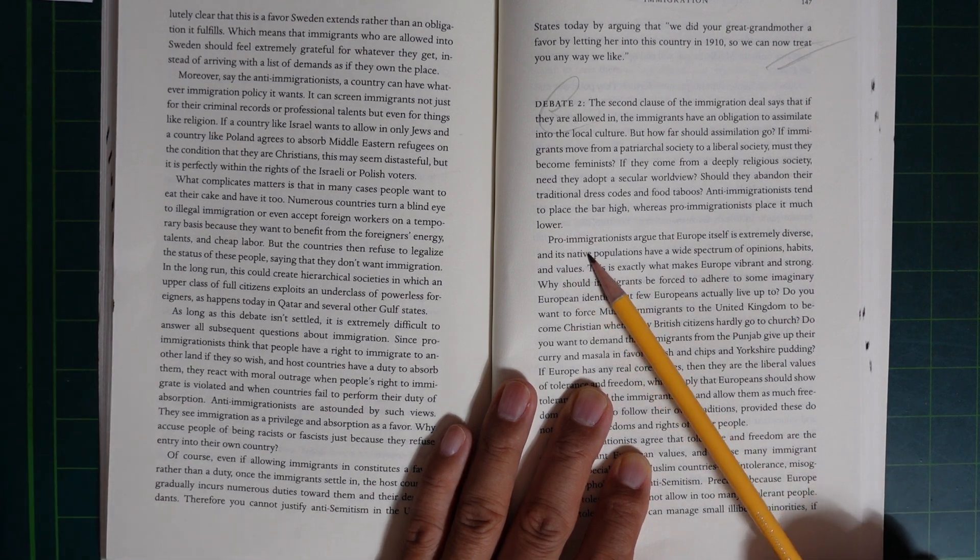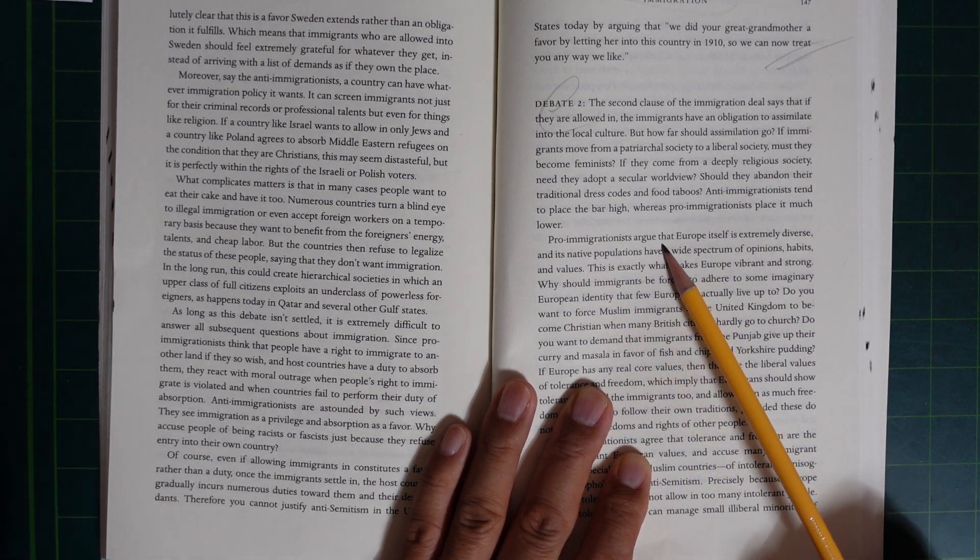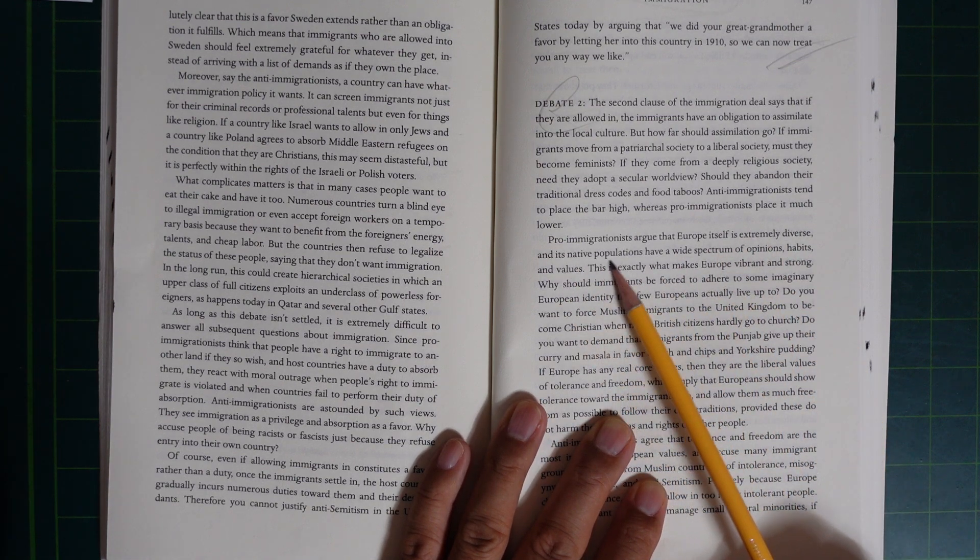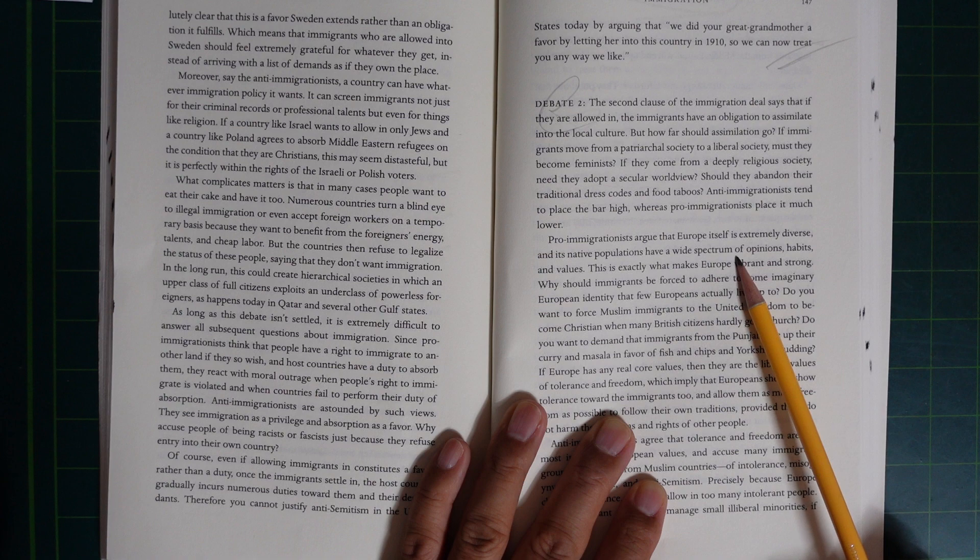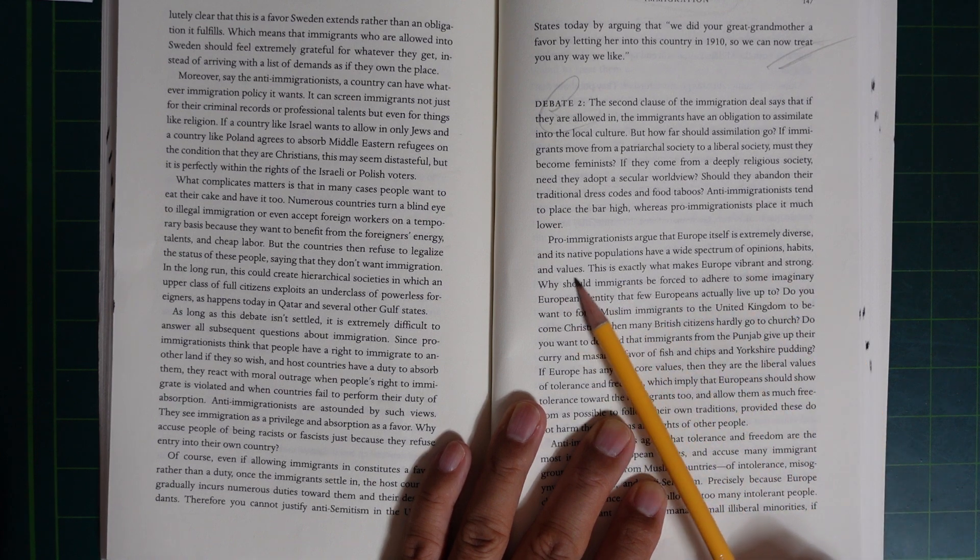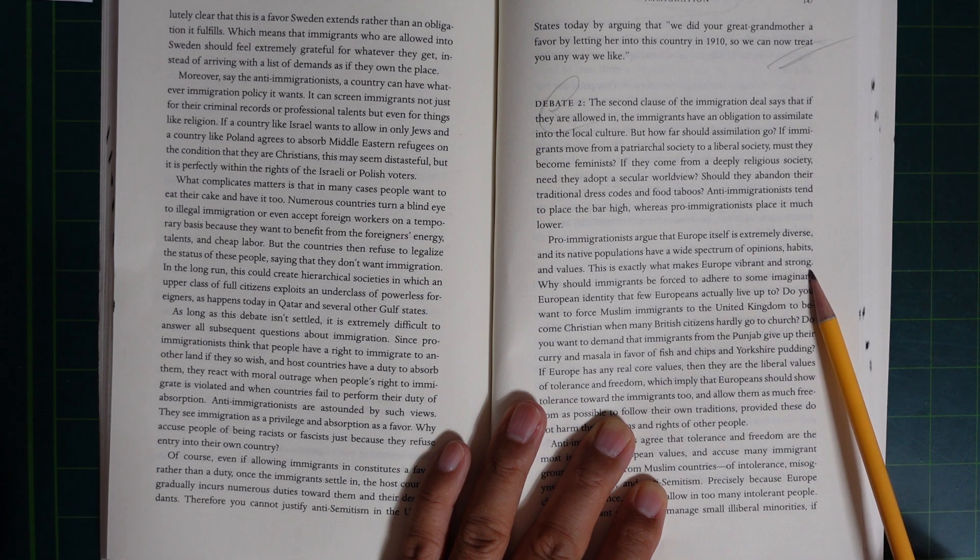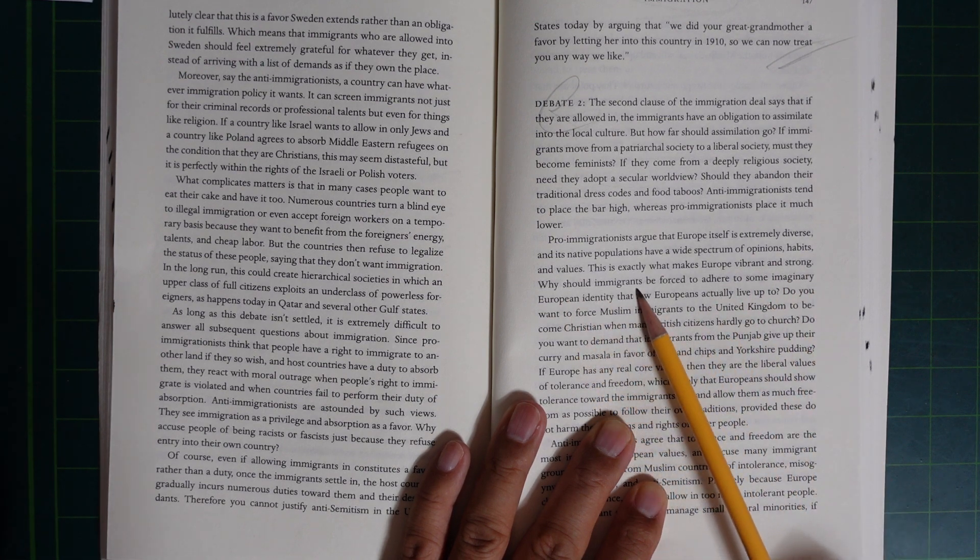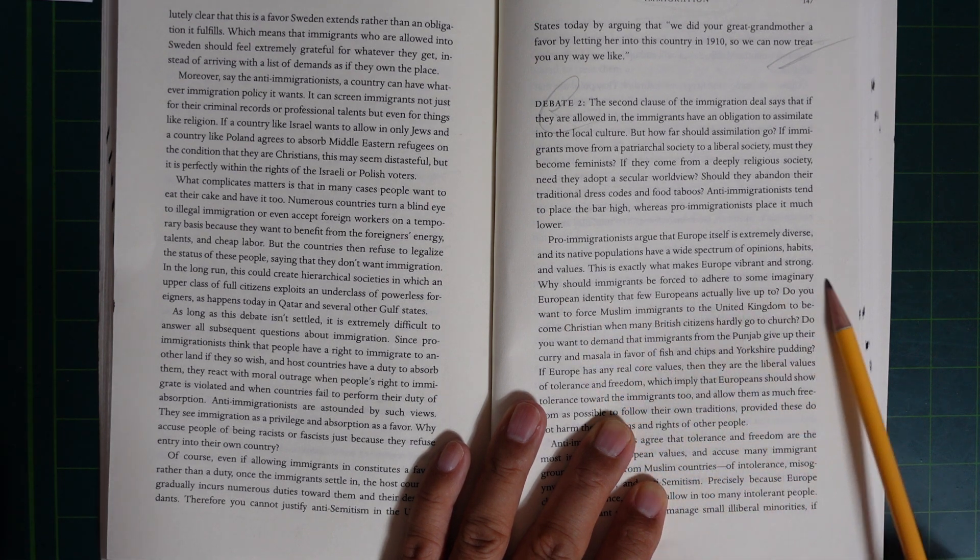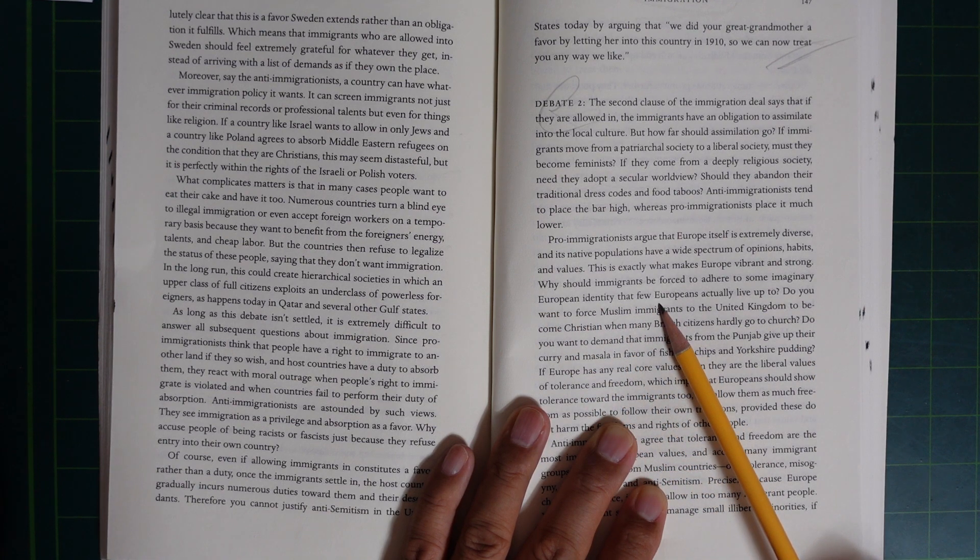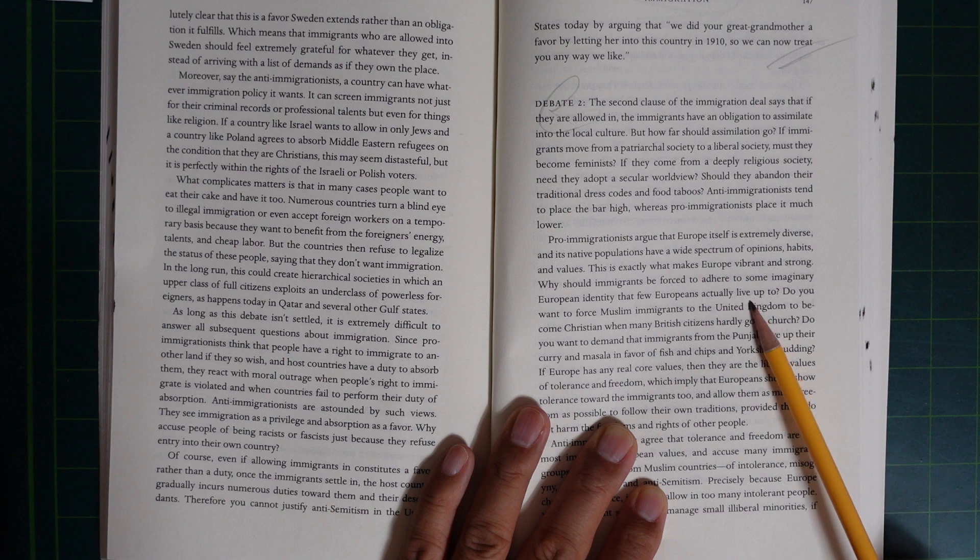Pro-immigrationists argue that Europe itself is extremely diverse and its native population have a wide spectrum of opinions, habits and values. This is exactly what makes Europe vibrant and strong. Why should immigrants be forced to adhere to some imaginary European identity that few Europeans actually live up to?